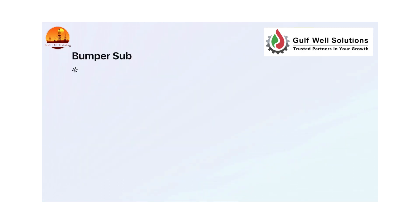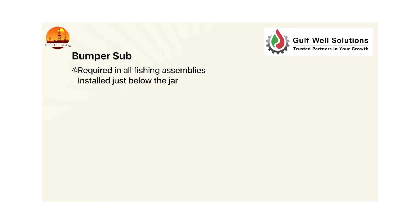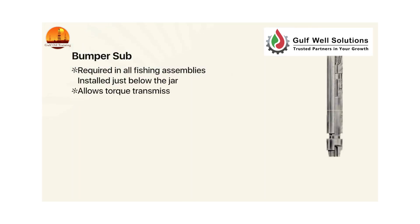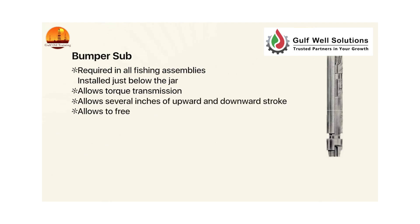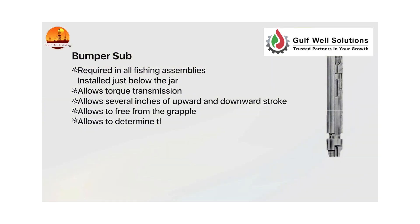Bumper sub: required in all fishing assemblies, installed just below the jar. It allows torque transmission, allows several inches of upward and downward stroke, allows release from the grapple, allows determination of the neutral weight of the string — 20 strokes usually.